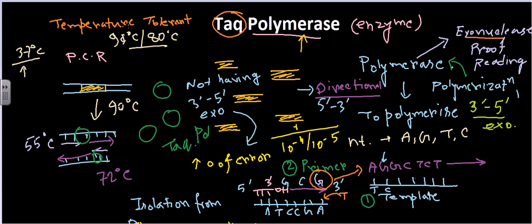Taq polymerase can tolerate a temperature of 90°C for a half-life of 40 minutes, which is a pretty good temperature tolerance. However, since it lacks exonuclease activity, when using Taq polymerase we need to compromise proofreading over the polymerization process.